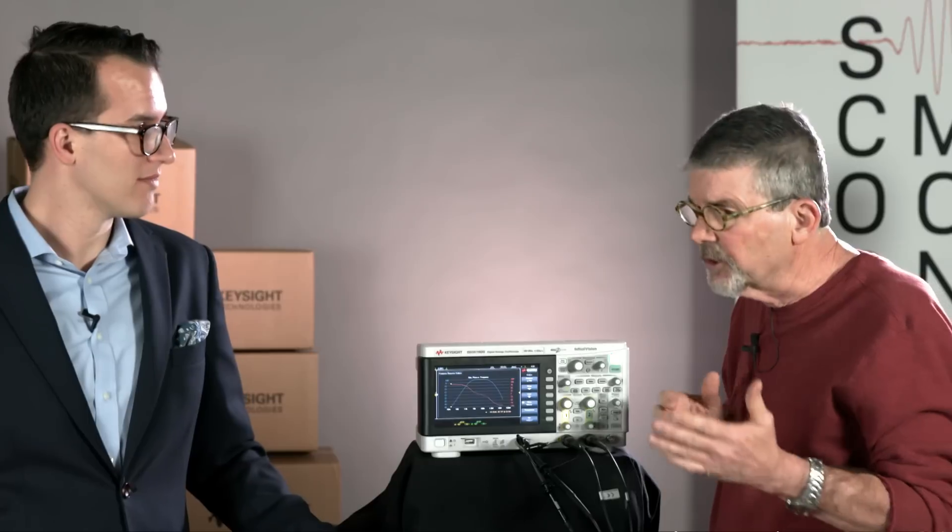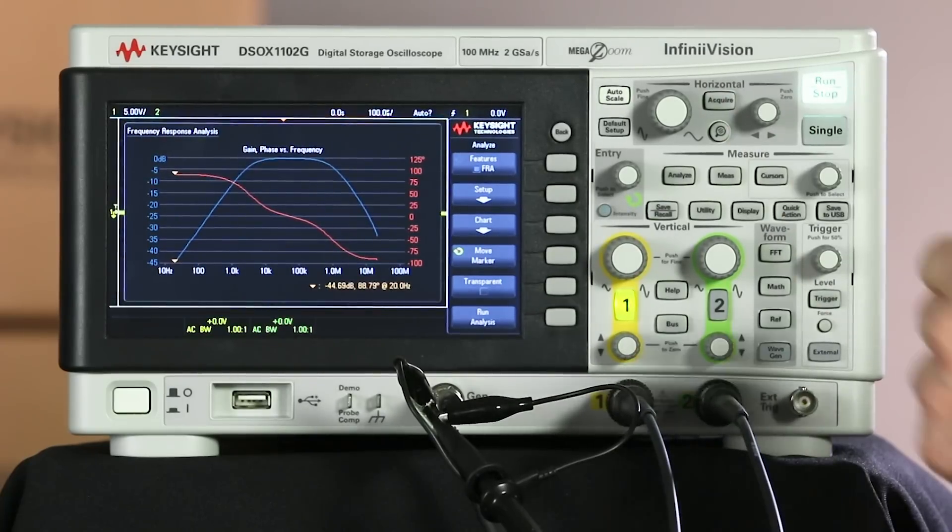And it'll change based on the settings that you have for the minimum and maximum frequencies. The test time will change. That's correct. Yeah, if you start at higher frequencies, it's going to run a lot faster. So naturally, you would just test the frequencies that you care about, not necessarily run the whole spread. So here we see the final plot.